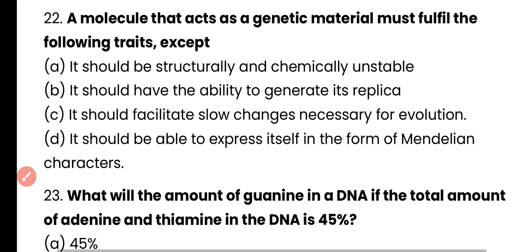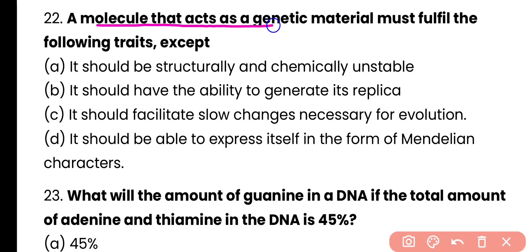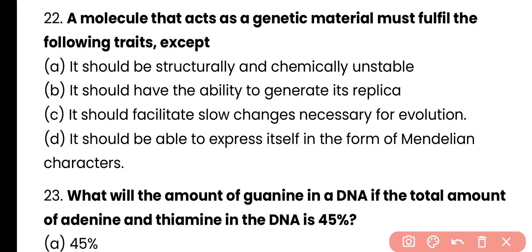Question number 22. A molecule that acts as genetic material must fulfill the following traits except: it should be structurally and chemically unstable, it should have the ability to generate its replica, it should facilitate slow changes necessary for evolution, or it should be able to express itself in the form of Mendelian characters. Option A is the exception. Genetic material should be structurally and chemically stable, not unstable.